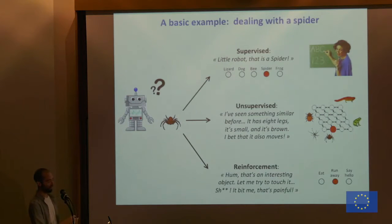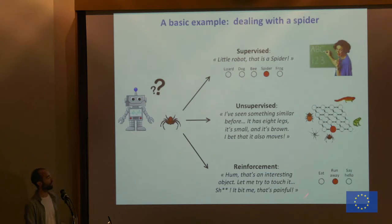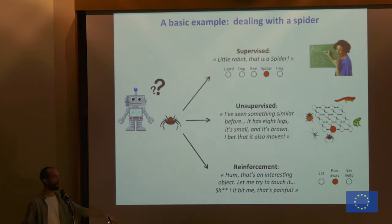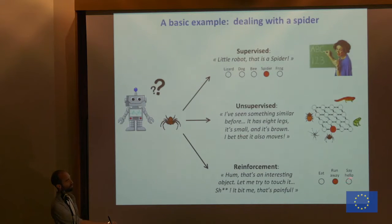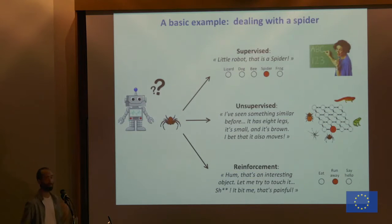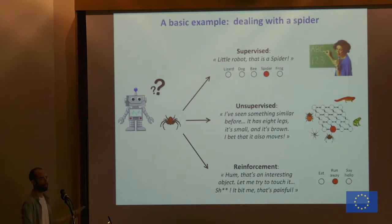In reinforcement learning, you touch it — it's interesting — and it bites you. It's painful. So you decide the correct action: you don't eat it, you don't say hello, you run away, because your direct feedback is informing you about the correct action to take.